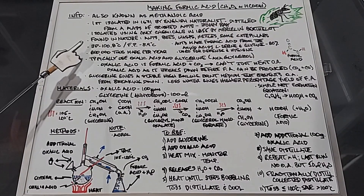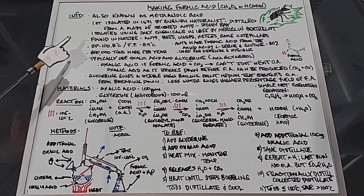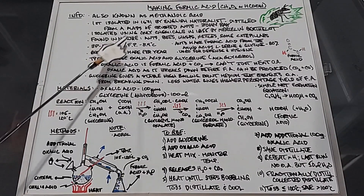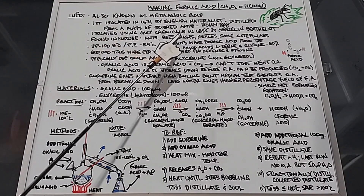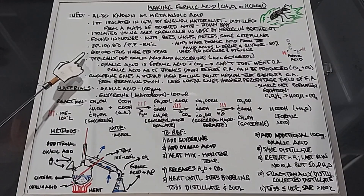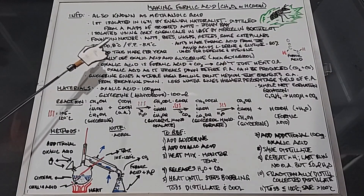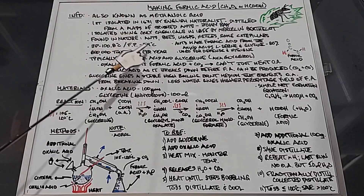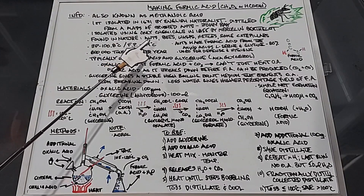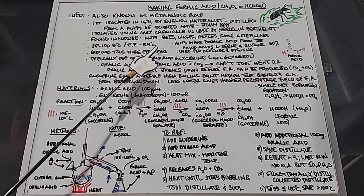Formic acid is found in nature as one of the most prevalent acids, especially amongst insects: ants, bees, wasps, nettles, and even some caterpillars. The boiling point for pure formic acid is 100.8 degrees Celsius, very close to water, and the freezing point is negative 8.4 degrees Celsius. There are 800,000 tons made per year for industry for all sorts of things.